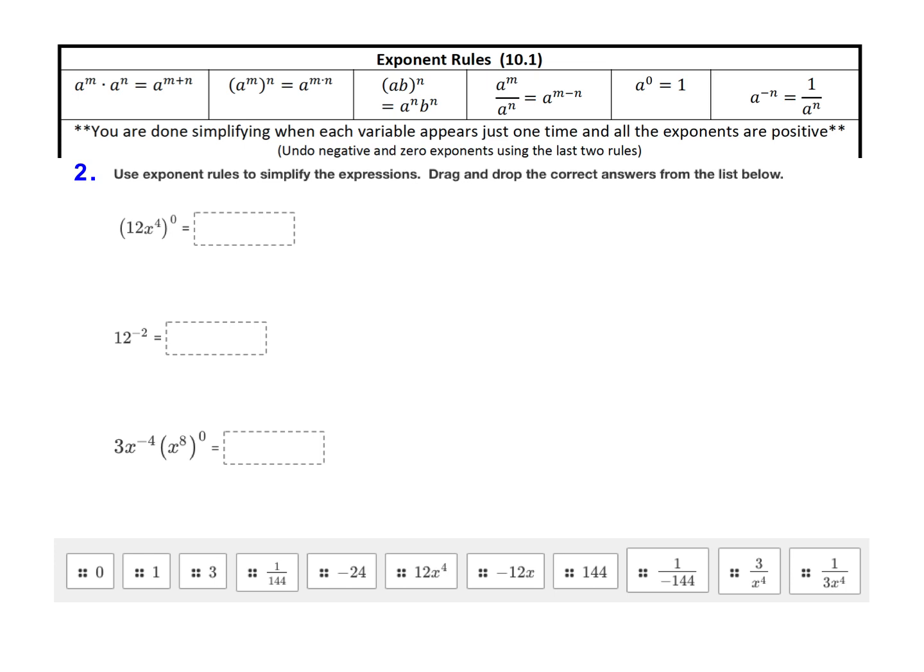We'll undo negative and zero exponents using the last two rules which are listed here. Any number to the power of zero is equal to one, and if you have a negative exponent, you take the reciprocal.